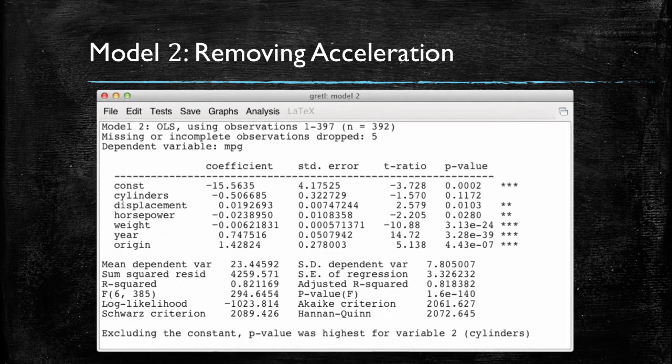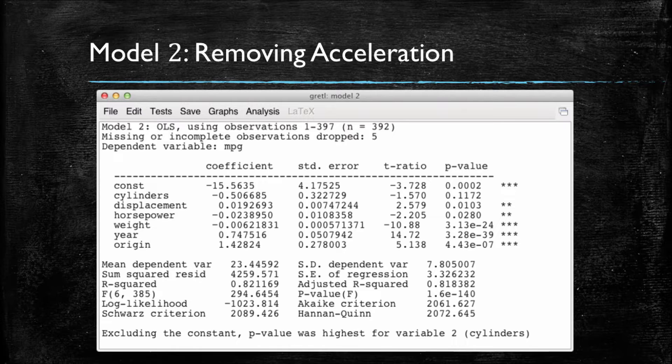I am now showing you the model with all the previous variables, but having removed acceleration. Note that, quite interestingly, horsepower, which previously had a very high p-value, now has a low p-value, a p-value of 2.8%. So we realize that this variable might actually be worthwhile having in our model. Meanwhile, cylinders is still insignificant, as it has a p-value of greater than 11%.